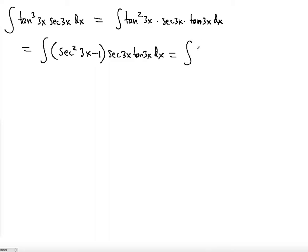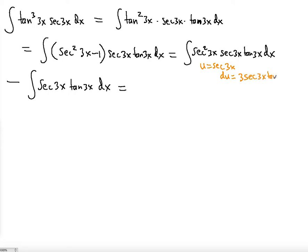So then we're going to distribute. We're going to have secant cubed 3x times secant 3x tangent 3x dx minus secant 3x times tangent of 3x dx. So now, using the u substitution, notice that if you use u equals secant of 3x, the du is going to be 3 secant 3x tangent of 3x.